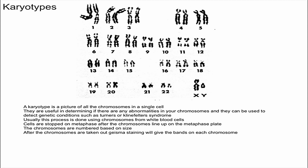Turner's syndrome is caused by an absence of one of the X chromosomes in a female. In the case of Klinefelter's syndrome, that's when a male — who normally has XY — has an extra X chromosome and would be diagnosed with Klinefelter's syndrome. These two examples are just about the sex chromosomes, but chromosome abnormalities can also occur on autosomes.